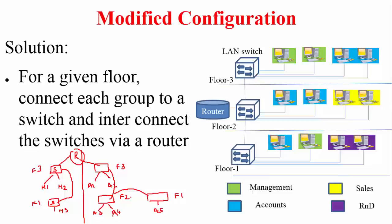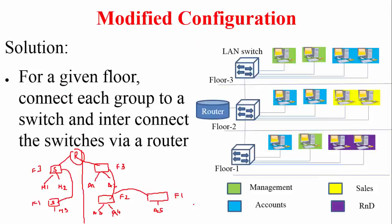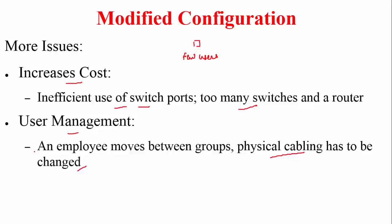But we still haven't covered virtual LANs. The problem with this modified configuration is that we are using too many switches, and each switch uses very few ports, which increases overall cost. There is also a user management problem: if an employee moves from accounts to management, the physical cabling must be changed to reflect the new group assignment. We want to avoid all of this.